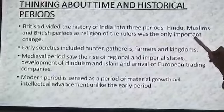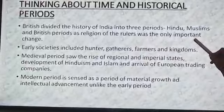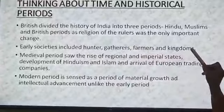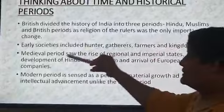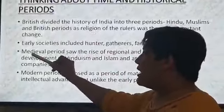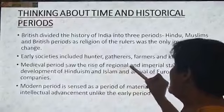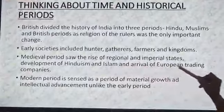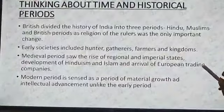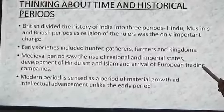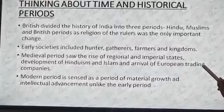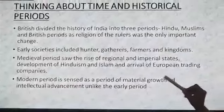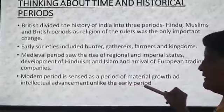What does it mean? The religion of a common person was not considered. Early societies including hunters, gatherers, farmers and kingdoms were ignored in this division. But even the period saw the rise of religions, regional and imperial states, development of Hinduism and Islam, and the arrival of European trading companies through waterways by the end of the period. Modern history is seen as a period of material growth and intellectual advancement, unlike the earlier period.